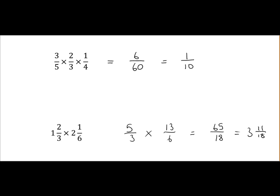The reason it's 3 and 11 over 18. 18 goes into 65 3 times remainder 11. So that's how we get 3 and 11 over 18.